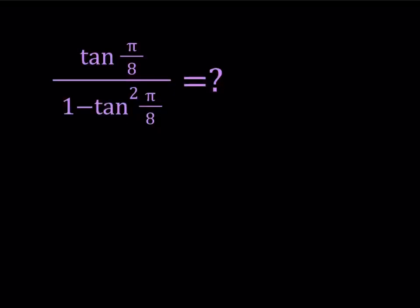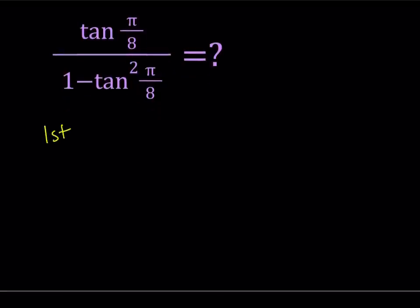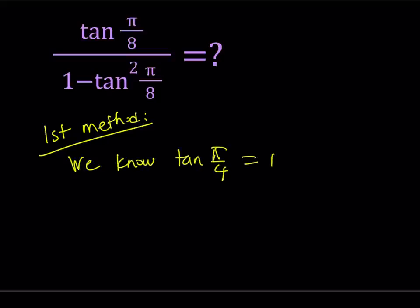Let's start with the first method. My first method involves the following. First of all, notice that we know tangent pi over 4 is equal to 1, because that is 45 degrees. So we have an isosceles right triangle. Now the question is, can we find tangent pi over 8 from tangent pi over 4?